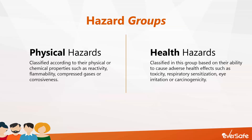In the health hazards group, products are classified based on their ability to cause adverse health effects, such as acute toxicity, respiratory sensitization — such as breathing difficulties, asthma, or allergies — eye irritation, or carcinogenicity, basically the ability to cause cancer.